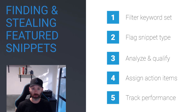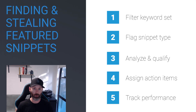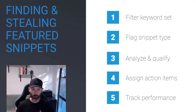Quick recap: First, drop your domain into SEMrush and filter your keyword set to only show terms you're ranking in the top three to five positions that you don't currently have in a featured snippet. Use the URL or keyword filter to drill into the keywords most valuable to your business. Next, flag the snippet type, then analyze the competing snippet to see if you can actually compete and steal it. Things that will disqualify a term include having the wrong content type or being unable to make the necessary formatting changes. Finally, assign action items and track performance in the SEMrush tracking template.